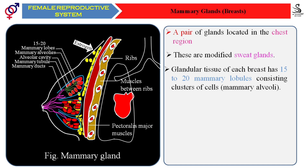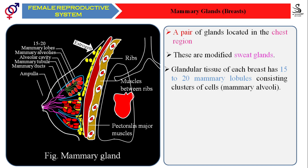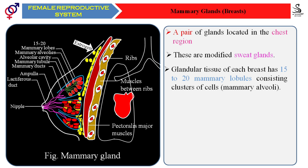Many mammary ducts join together to form a common mammary duct, which has a slightly enlarged area called the ampulla. The ampulla further leads into small ducts called lactiferous ducts, and the lactiferous ducts open at the tip of the nipple. This is the structure of the alveolar tissue present inside the mammary gland.